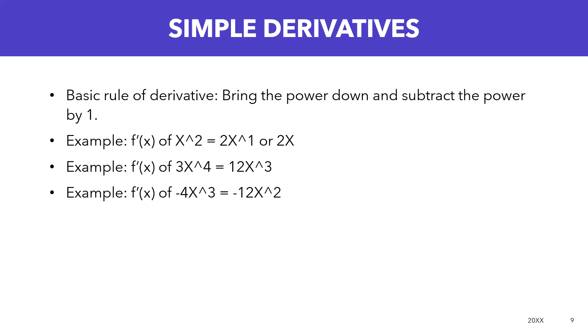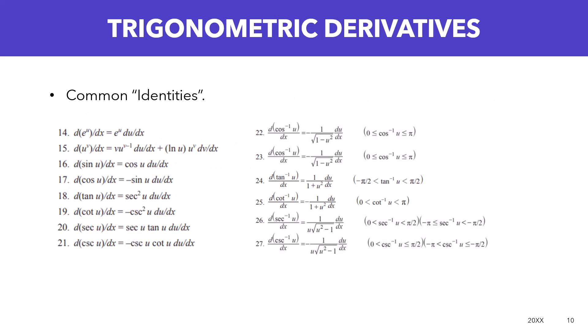And if you have a negative, the same principles apply. Negative 4x raised to the third, you bring the three down, so multiply negative four by three, so now you have negative 12x squared. For a negative it would be a similar function as well.